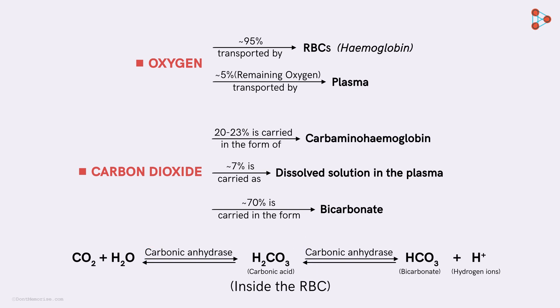In a nutshell, majority of oxygen is transported by binding to the hemoglobin protein. On the other hand, carbon dioxide is transported mostly in the form of bicarbonates in the RBCs, and the remaining in the form of carbaminohemoglobin in the RBC and dissolved carbon dioxide in the plasma. This is how transport of the two gases is carried out.